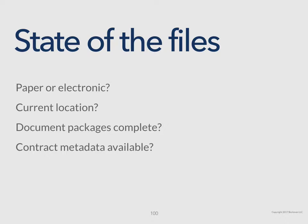You've got to assess the current state of those files. Ask yourself some basic questions: Are they paper or electronic? Where are they located physically — meaning what computer, if they're electronic, or what their physical location is if they're paper? Are the document packages complete? When you go grab that paper file, or go to that network directory or document management system, are all of the documents for that relationship together or not? And is there any contract metadata already available for those files?